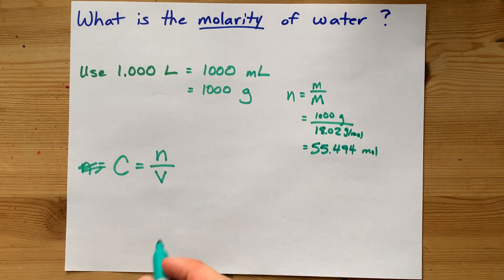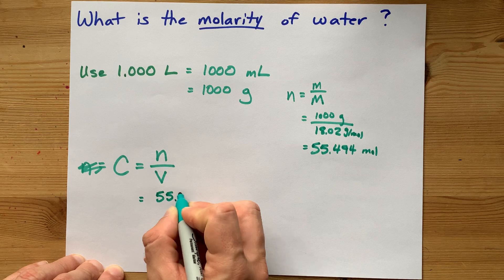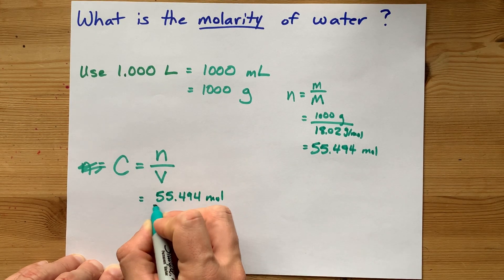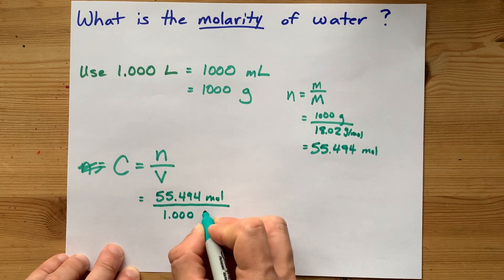Now, molarity, by definition, is the number of moles, 55.494, divided by the number of liters you have, which for us was 1 liter.